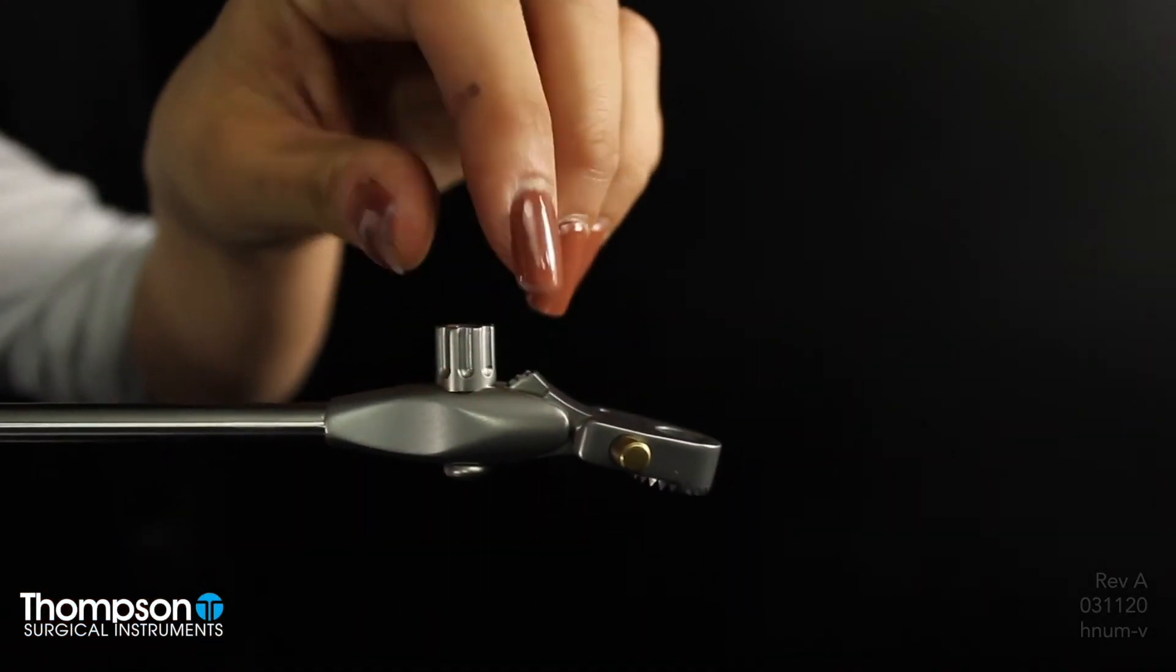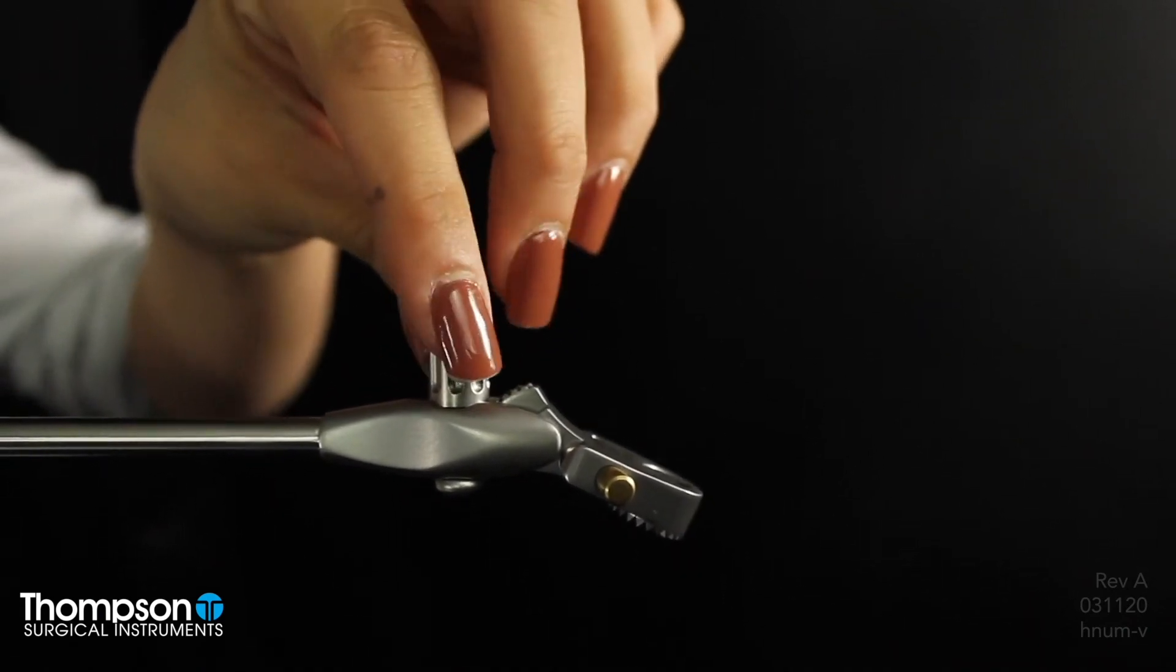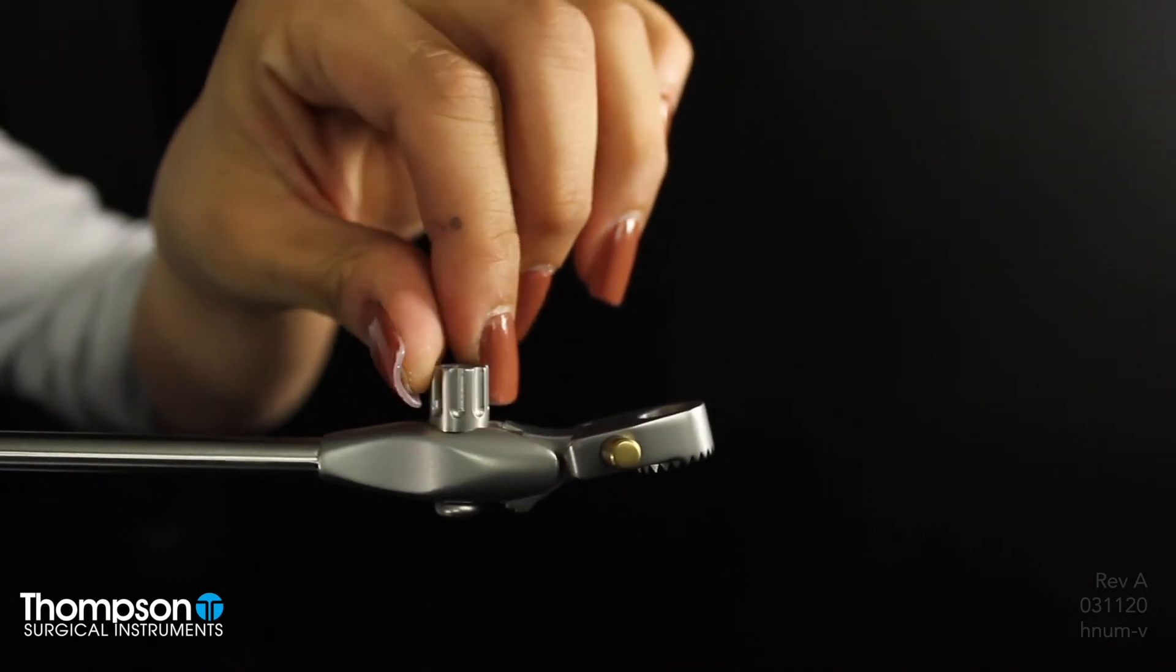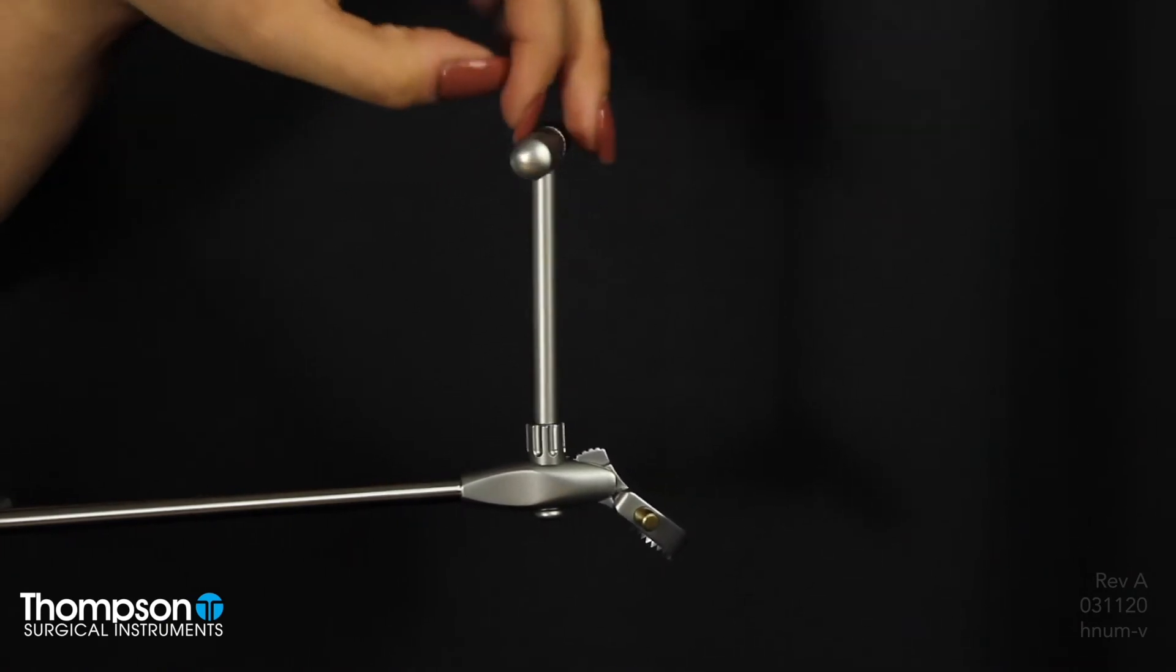Thompson's quick angle handles offer the ability to toe the blade up or down 45 degrees by turning the quick angle knob with fingers or under heavy retraction with the included T-handle.